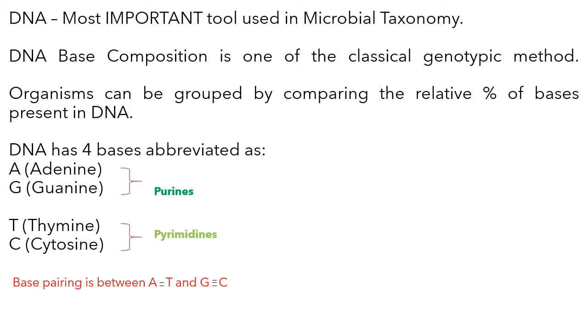One is phenotypic, depending on observable characteristics, and another is genotypic, based on genetic material - studying the genetic material or products related to DNA, such as RNA and protein. That comes in the genotypic method.